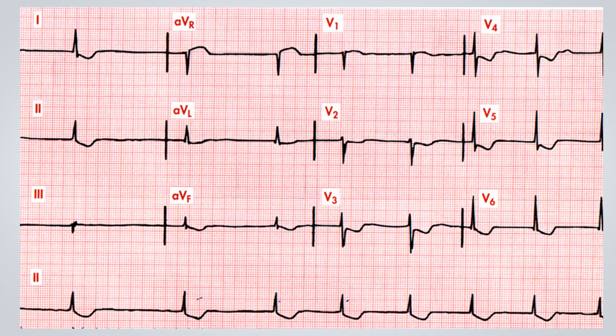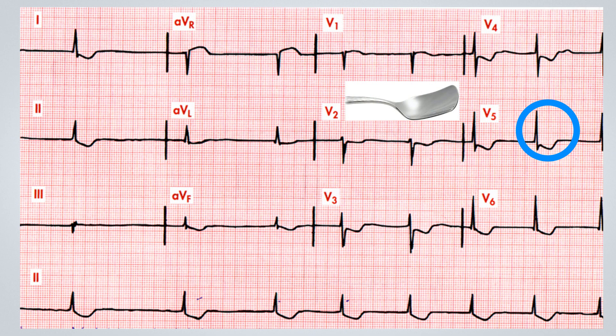However, instead of a high ventricular response, it is exhibiting a low ventricular response. The patient is also experiencing nausea. Upon scrutinizing the ventricular repolarization, we detect an alteration in the ST segment. This anomaly is visible across all leads, particularly leads D2 or V3 to V6. This pattern is akin to what we term the spoon sign, which is not indicative of digitalis toxicity, but of digitalis saturation.